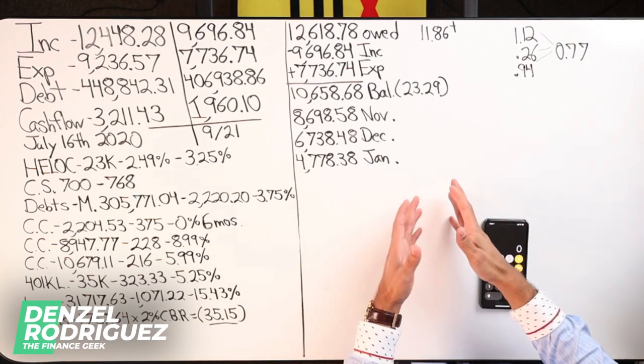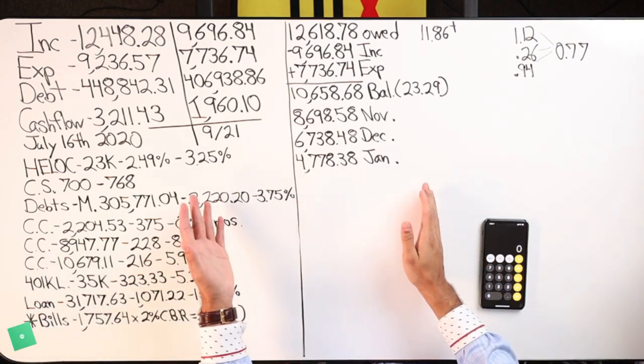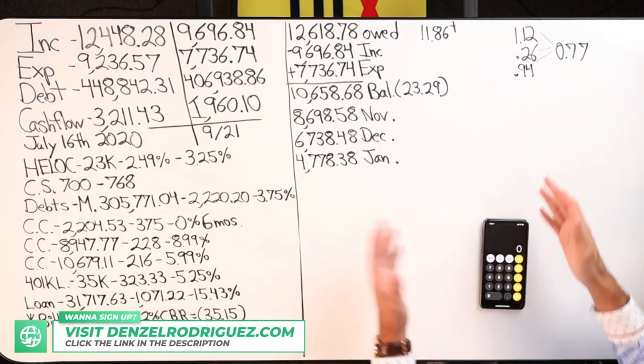How much money do we know or should we be pulling out? Should we be pulling money out every day, every week? What's the most efficient way to do that?